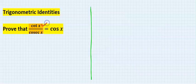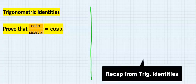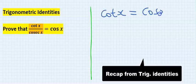Proof that cot x divided by cosec x will give you cos x. Recap from trigonometric identities: cot x is cos x over sine x.